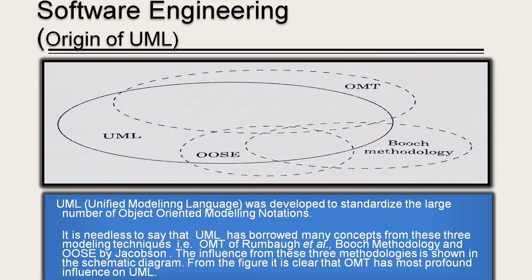The origin of UML: UML, the unified modeling language, was developed to standardize the large number of object-oriented modeling notations. As discussed, there are different popular methodologies given by different authors. UML borrowed many concepts from three modeling techniques: the object modeling technique (OMT) of Rumbaugh, Booch methodology, and object-oriented software engineering by Jacobson. The influence from these three methodologies is shown in a schematic diagram, and it is clear that OMT has the most profound influence on UML.